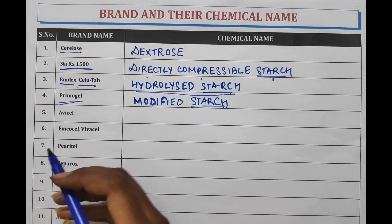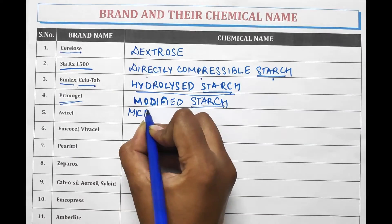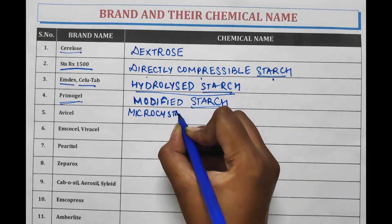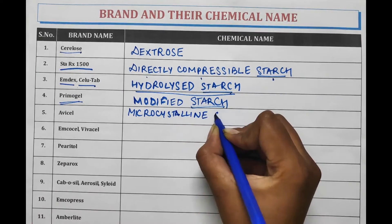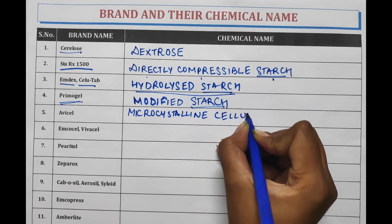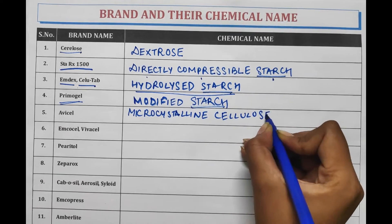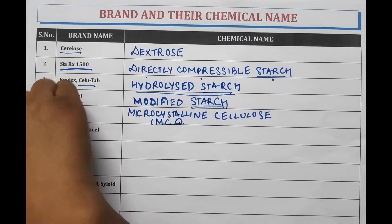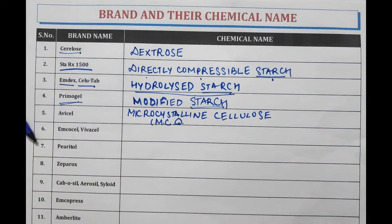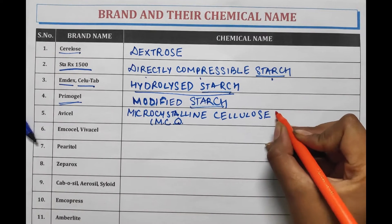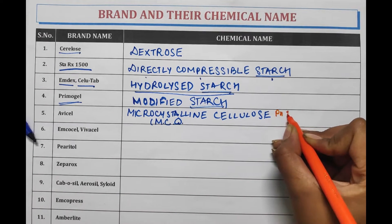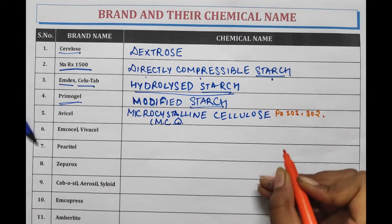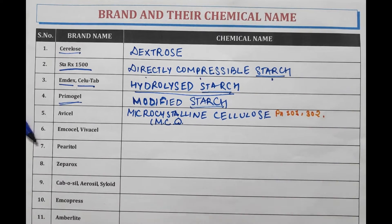Next is Avicel. Avicel is the brand name of Microcrystalline Cellulose, also known as MCC. It is very important that MCC is of various grades ranging from PH 101 to PH 302, and each grade has a different particle size.